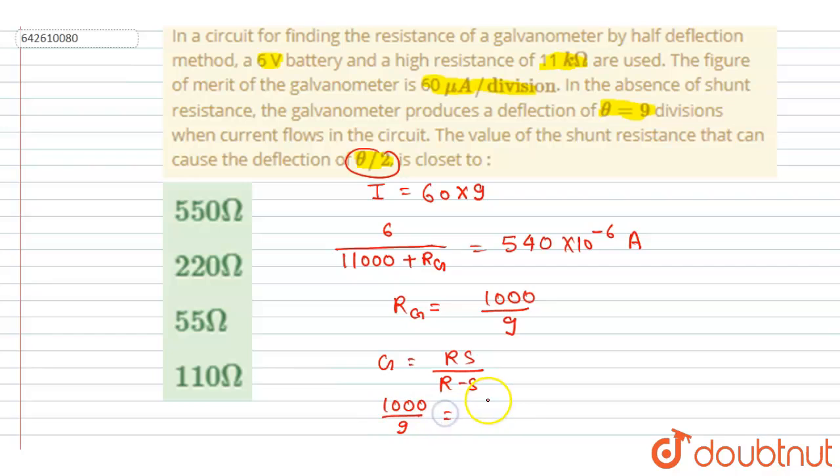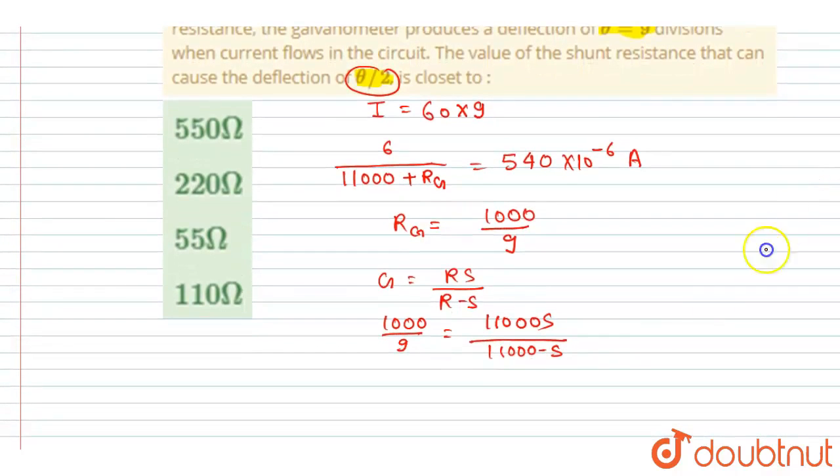And we want the shunt resistance, just put the value of resistance, that is 11000, and s divided by (11000 minus s). So after solving this expression, you can get the value of s. The value of s here will be...